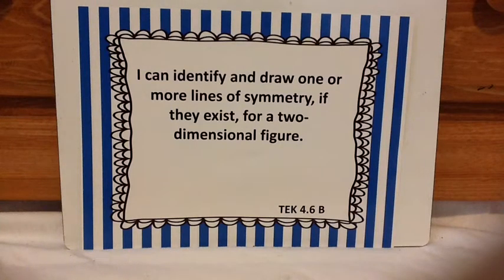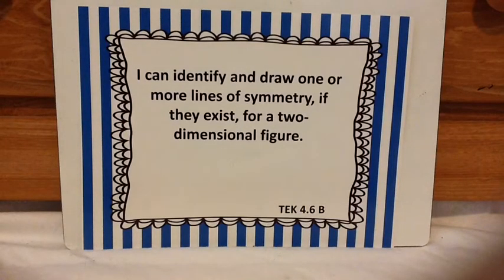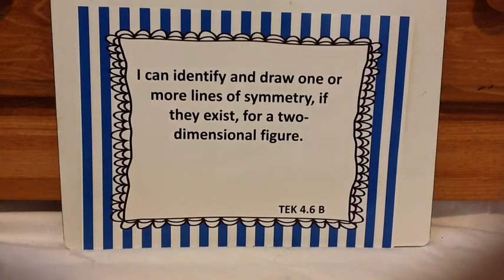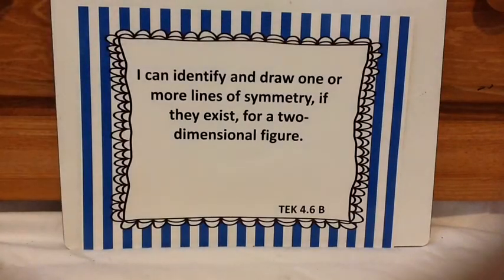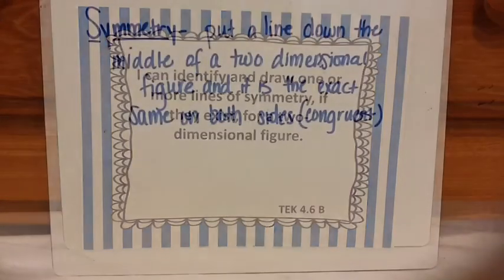Hi scholars, let's look at TEKS 4.6B. I can identify and draw one or more lines of symmetry if they exist for a two-dimensional figure. I'm going to be using patty paper or tracing paper, a marker, and my marker board to explain this. So let's get started.